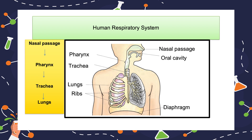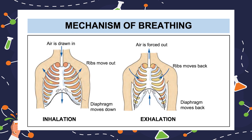This cavity is surrounded by ribs on the sides. As you can see on the screen, a large muscular sheet called the diaphragm forms the floor of the chest cavity. Breathing involves the movement of the diaphragm and the ribcage. During inhalation, the ribs move up and outwards and the diaphragm moves down.